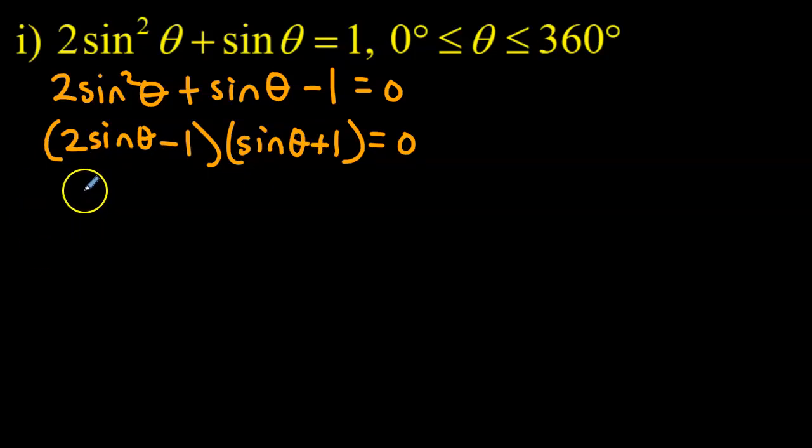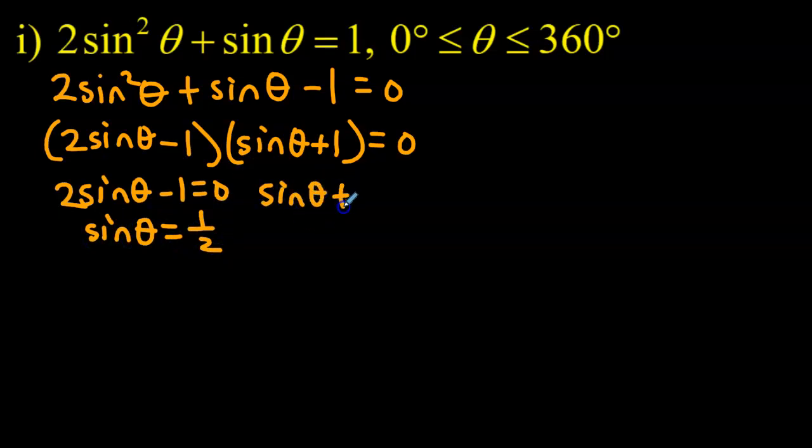From here we simply take each of these factors and set them equal to zero. So 2 sine theta minus 1 equals zero when sine theta equals half. And sine theta plus 1 equals 0 when sine theta itself is equal to negative 1.